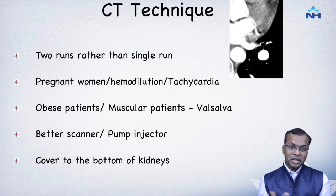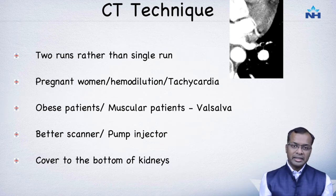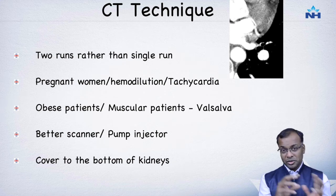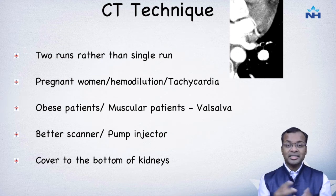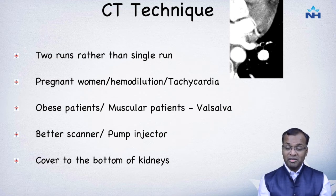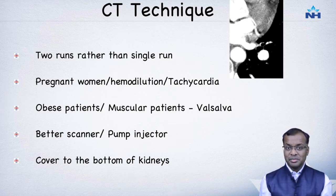A quick word about CT technique. We perform two runs after contrast injection, giving good contrast in the pulmonary artery to look for clots, and good contrast in the aorta to look for shunts. We scan down to the bottom of the kidneys to assess for portosystemic shunts, liver abnormalities, and abnormal portosystemic vascular connections. This makes the examination comprehensive, also ensuring we evaluate the lungs for primary pulmonary parenchymal abnormalities.